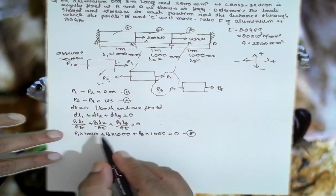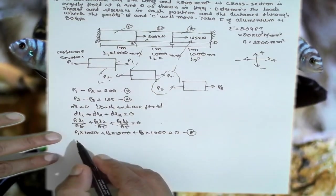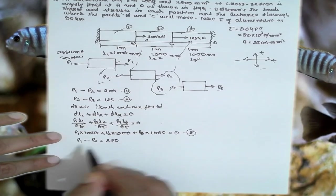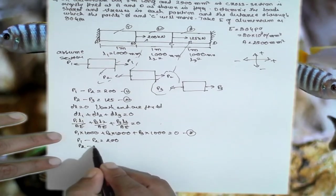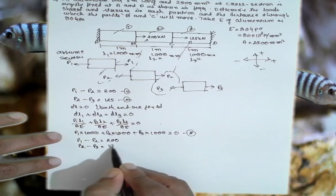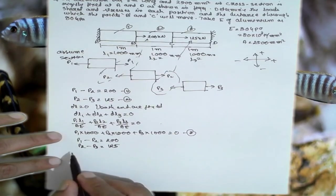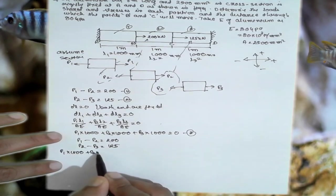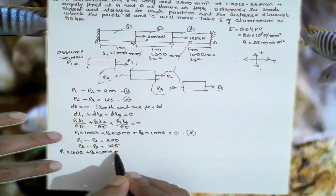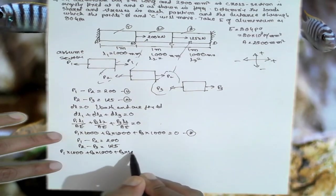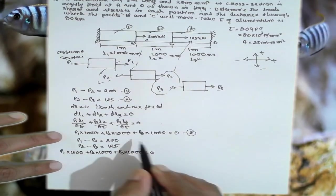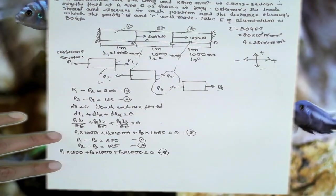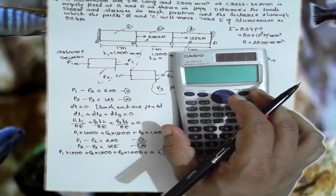Now, from the calculator, we are equating here: P1 - P2 = 200 kN. P2 - P3 = 125. 1000 + P3×1000 = 0. 1, 2, and 3. With the help of calculator, we can directly find the result.